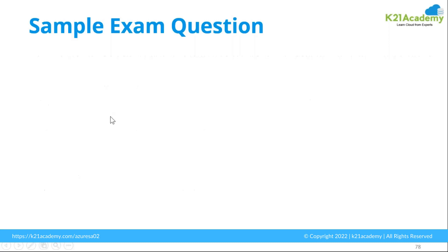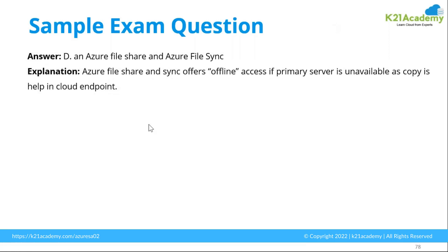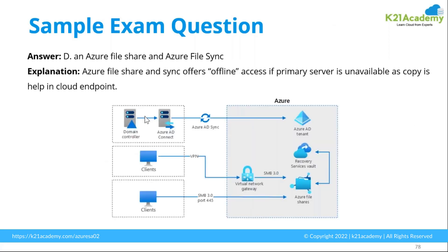Azure File Share and File Sync offer offline access when the primary server is unavailable, serving as a cloud endpoint. You sync the files to your file share and users connect through SMB protocol, or you can allow accessibility through the network using a service endpoint or private endpoint connectivity. Both are available when you create a storage account. The key requirement is that the file has to be synced.